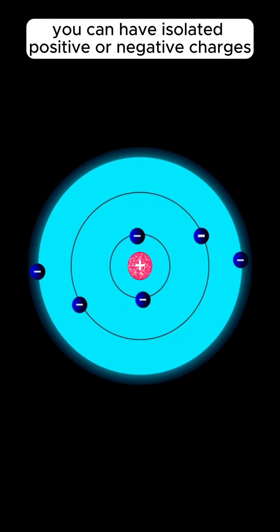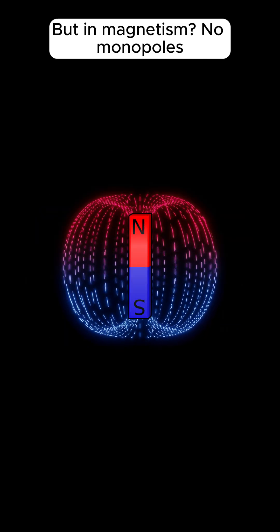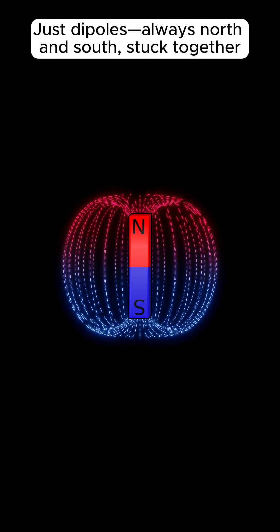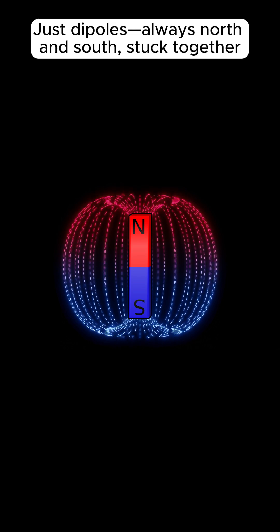In electricity, you can have isolated positive or negative charges, but in magnetism, no monopoles, just dipoles, always north and south, stuck together.